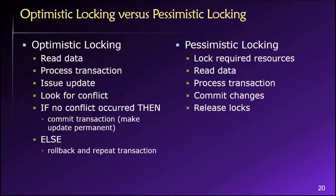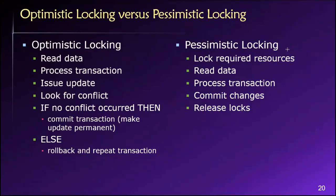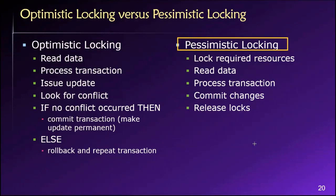I'll start with pessimistic locking because this is the simplest to understand. The reason we call this pessimistic locking is because we are going to assume going in that it's likely that some other user will want to work with or update the same data that we want to work with, at the same time. So it's got a pessimistic view.